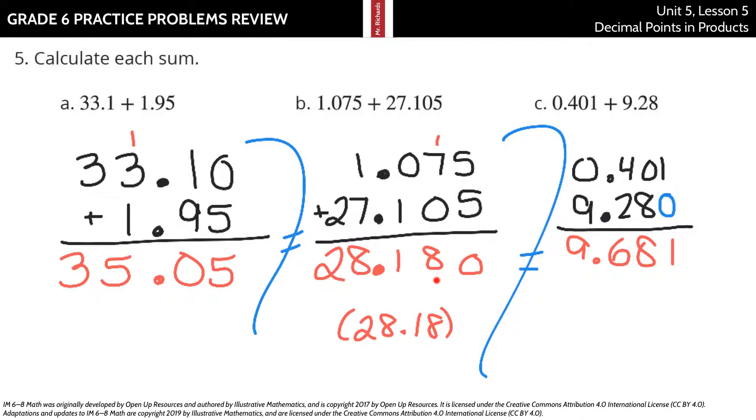Five plus five is ten, carry the one. One plus seven is eight. Zero plus one is one. Decimal point down, one plus seven is eight. And then you've got your two. Now you can keep it like this, or you can simplify it to twenty-eight and eighteen-hundredths.